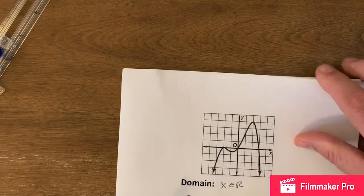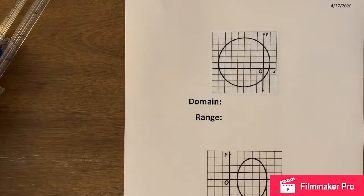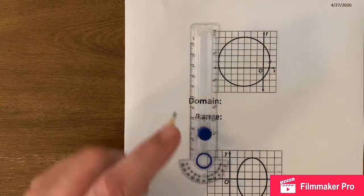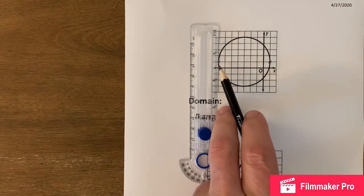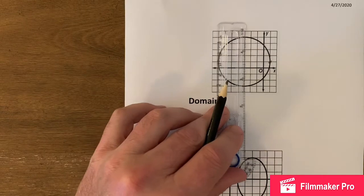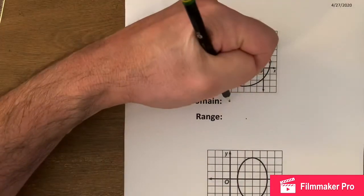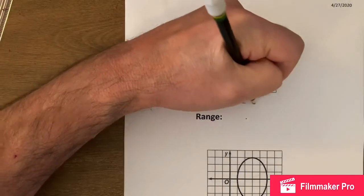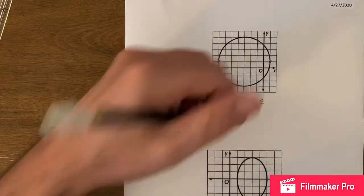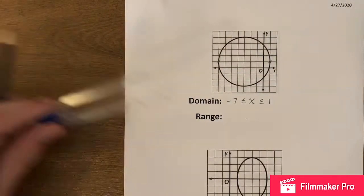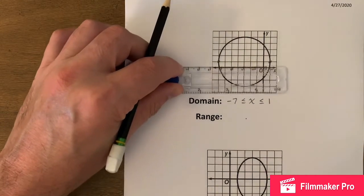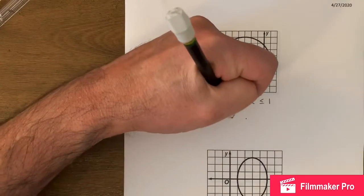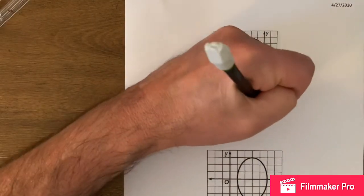Okay, we've got some circles. Domain for the circle: looks like it starts at negative seven and ends at one — so negative seven less than or equal to x less than or equal to one. For the range, it looks like it starts at negative three and goes all the way up to five: negative three less than or equal to y less than or equal to five. For this one here we have an ellipse — same idea. It looks like x goes from one to five: one less than or equal to x less than or equal to five.